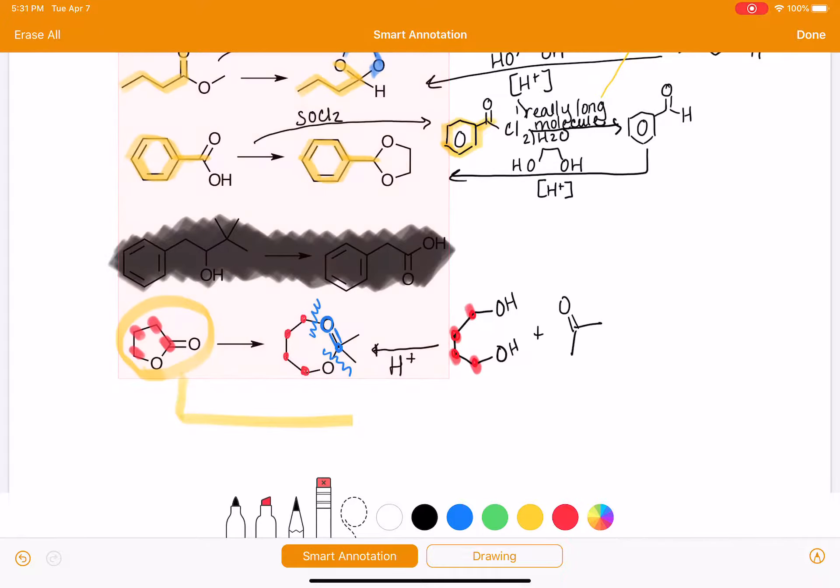How can we convert an ester to an alcohol? In order to do that, we need to reduce. So can we use LAH, a reducing agent? Let's kind of halfway draw a mechanism and see if that would be reasonable.